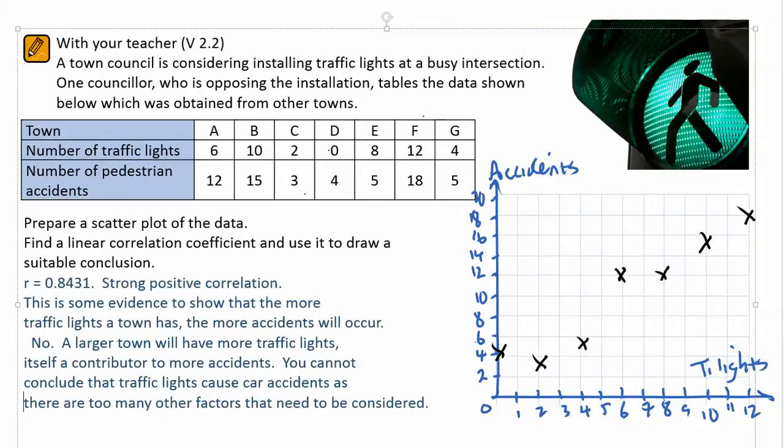And you could enter something along the following lines. A strong positive correlation. Some evidence to show the more traffic lights a town has, the more accidents will occur. But it's not an example of causation.